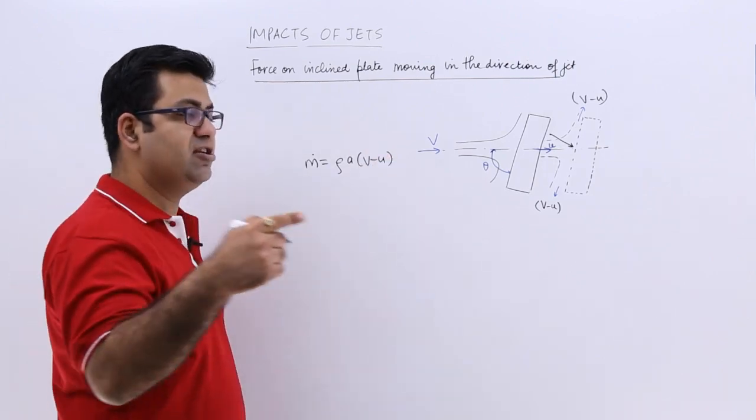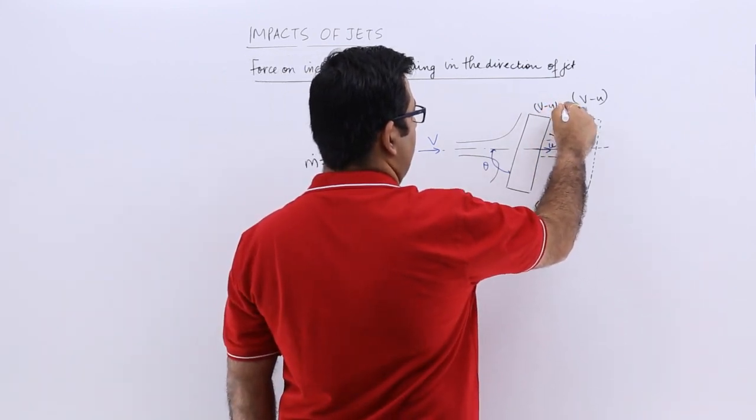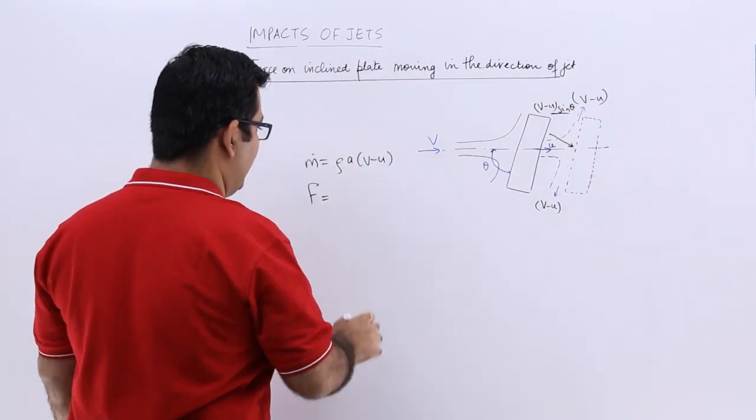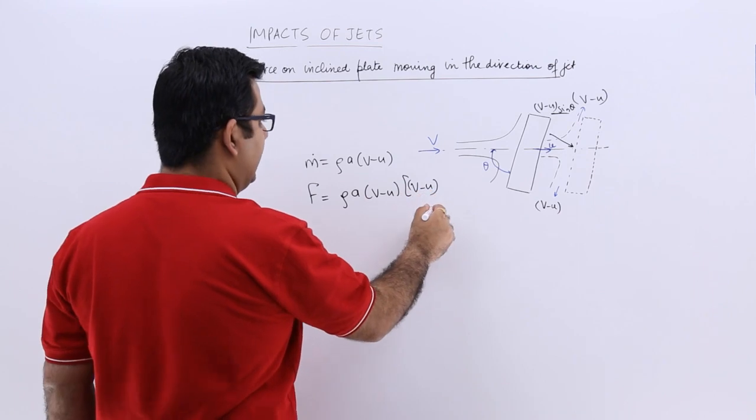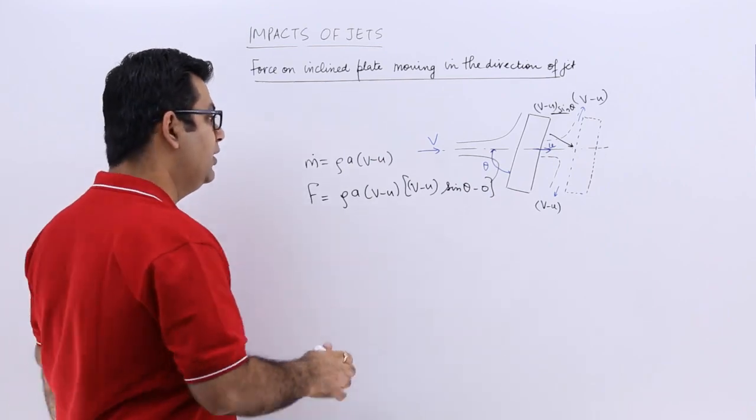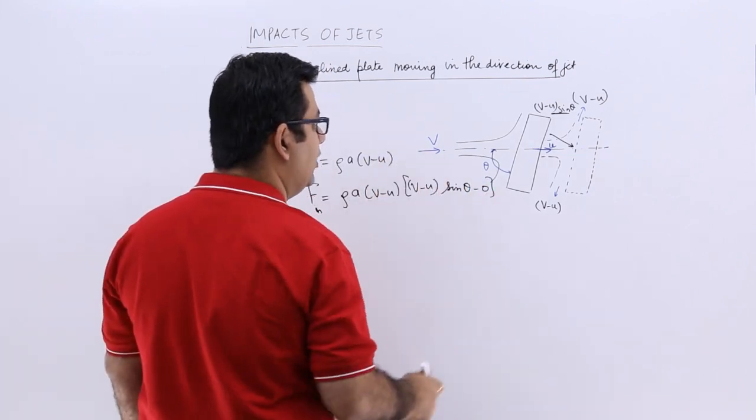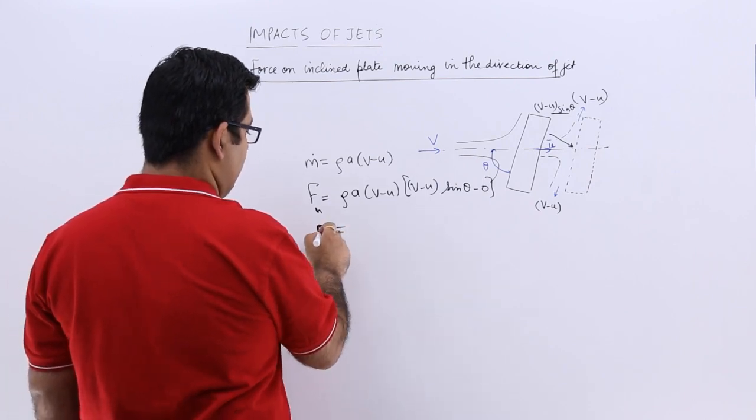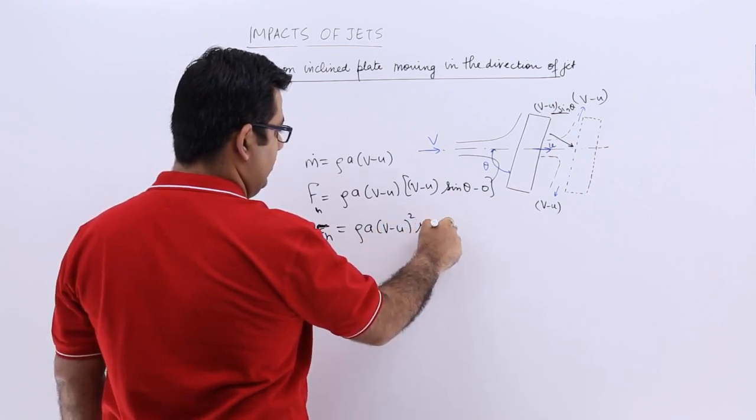Now for the change of momentum, I will have to take this which is v minus u sin theta. So you will have your force as rho into a into v minus u sin theta minus 0, because that is the component which is perpendicular to the plate. So you will have Fn as rho into a into v minus u square sin theta.